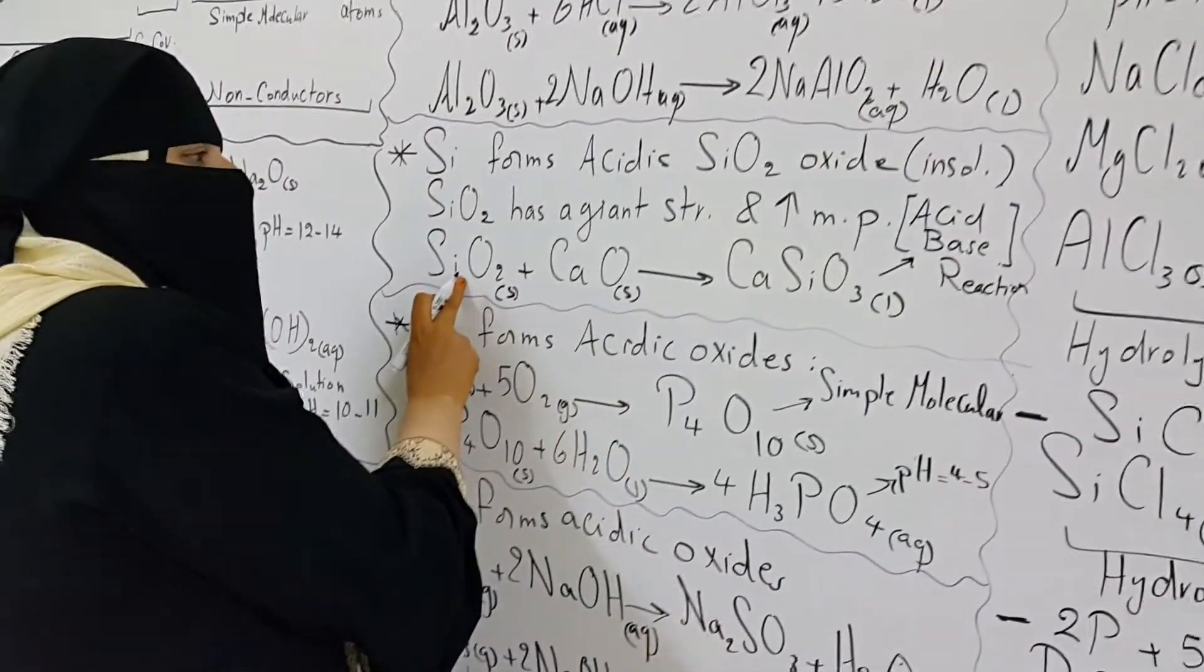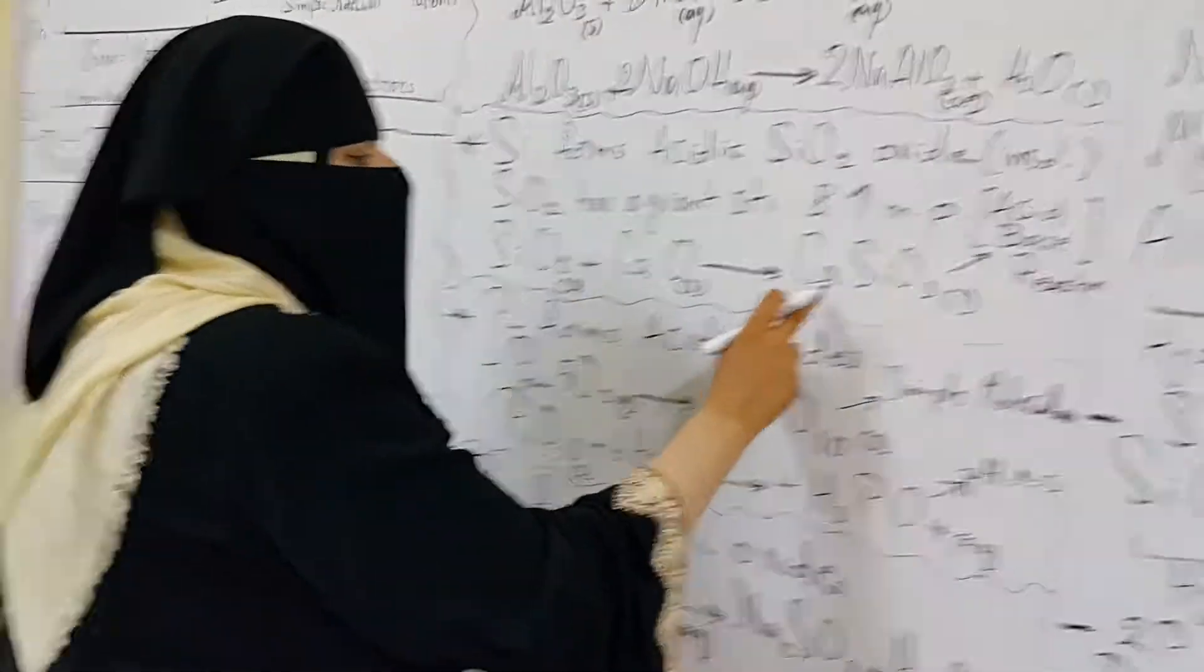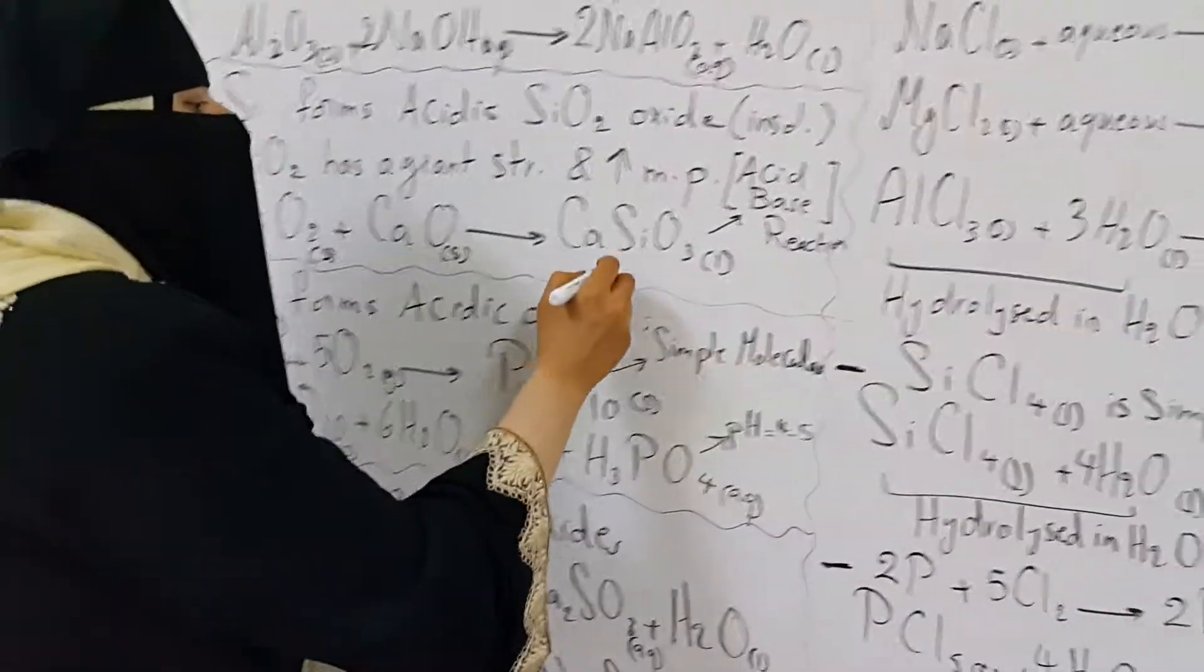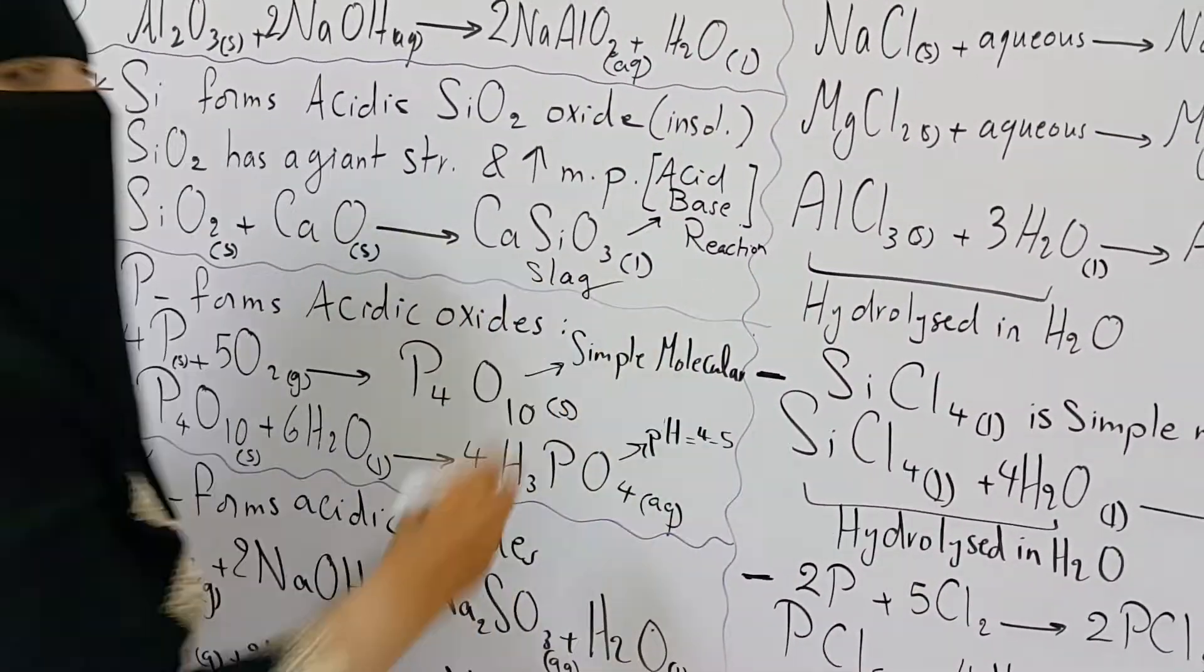So the reaction of silicon dioxide with calcium oxide is considered as an acid-base reaction. Why is that? Silicon dioxide is acidic. Calcium oxide is basic. And they form a salt called calcium silicate, which is known as slag, as you remember from your O-level.